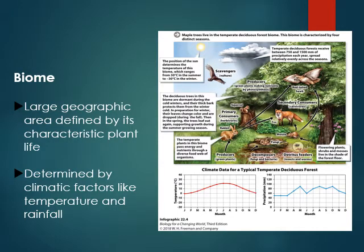Looking at the bigger picture: a biome is a large geographic area defined by its characteristic plant life, determined by things like temperature and rainfall. There are roughly 10 different kinds of biomes in the world, and it's a very large area we're talking about.